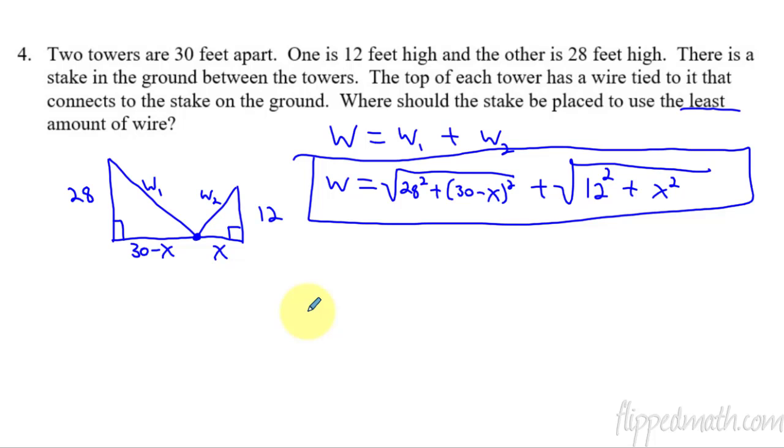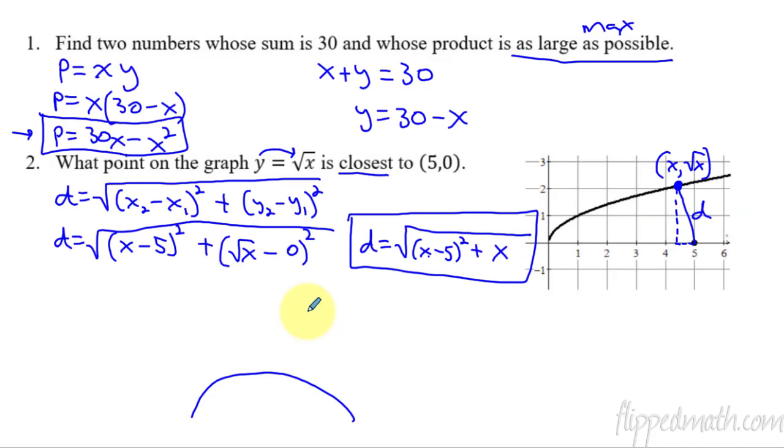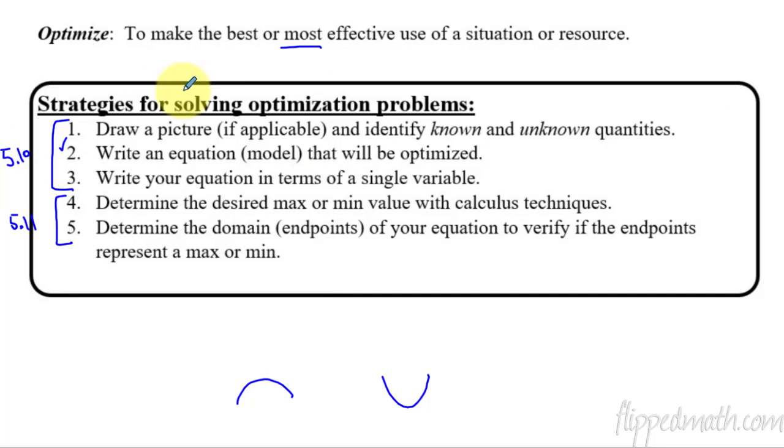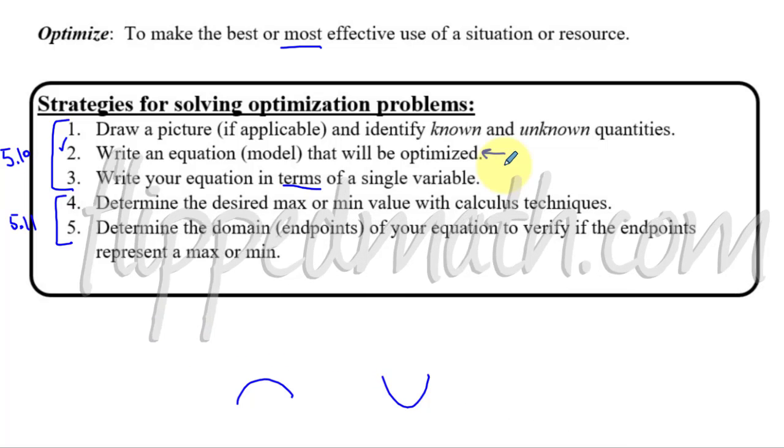I've covered the basic idea. And again, let's go back to the strategies that we're going to use. Draw a picture when it's needed, helps you identify the known and unknown quantities, write an equation that you're going to optimize, and then just make sure the equation you've written is in terms of a single variable. You want only one variable before you would take the derivative. That's everything. So rock that mastery check, and I'll see you back in the next lesson where we will solve these problems.